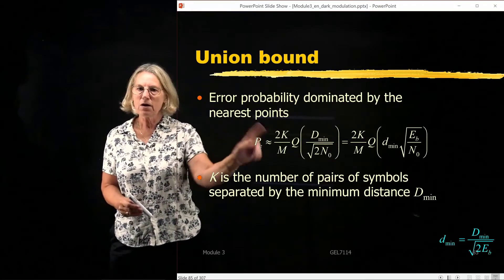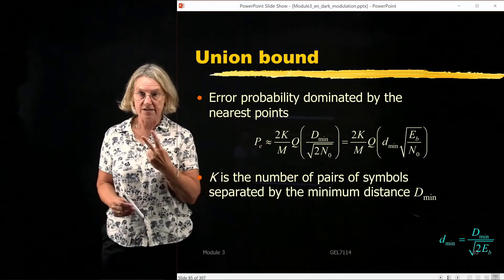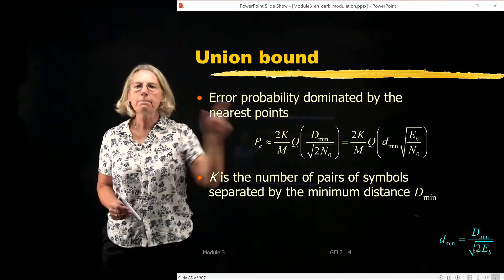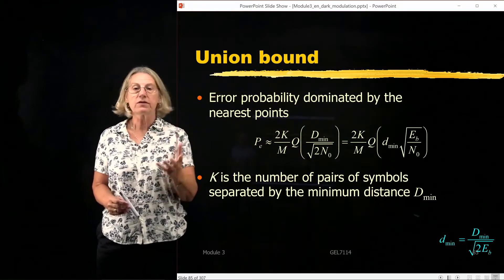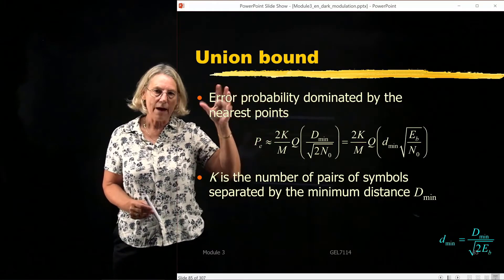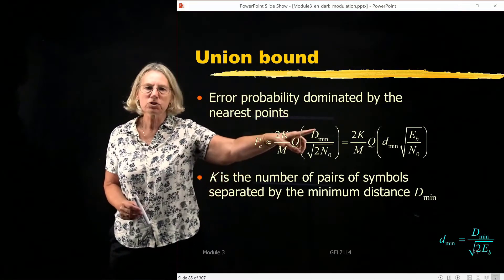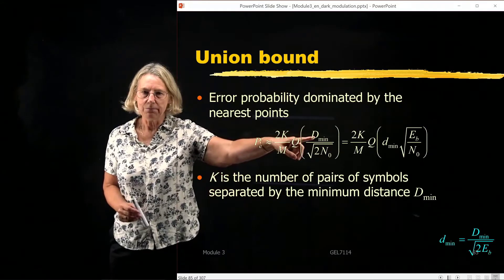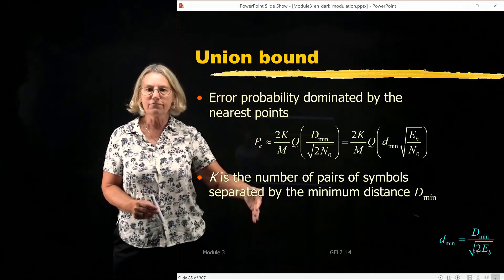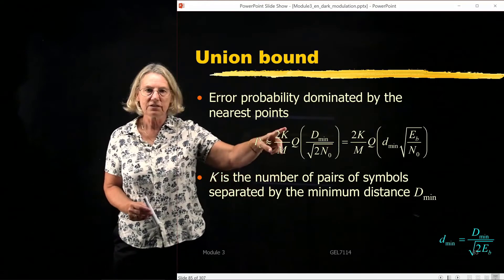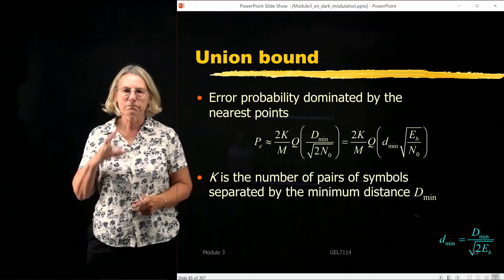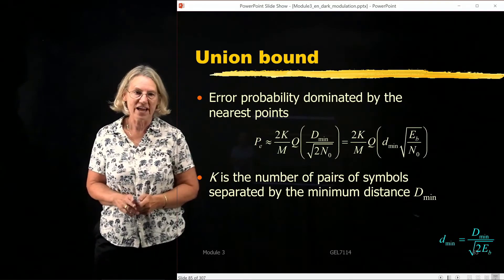The probability of error approximation is determined by two things: what is the minimal distance, and how many pairs of symbols are there at that minimal distance? In terms of the dominating numerical effect, it's much more dominated by D_min, which gives the exponential roll-off to the bit error rate function, and less so by K, which is just a multiplicative factor for the number of pairs at the minimum distance.